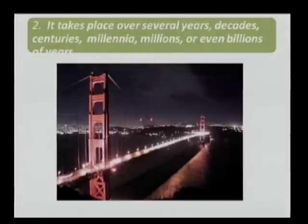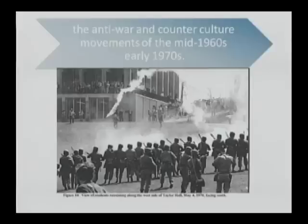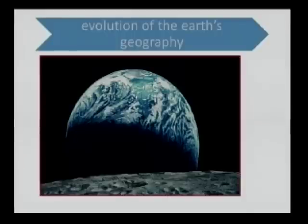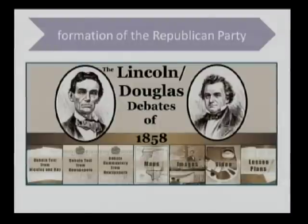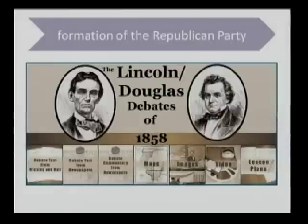The anti-war and counterculture movements lasted perhaps a decade or so, depending on when you think they began and ended, to the billions of years that it took for the Earth to evolve out of the solar nebula. Perhaps the shortest timeframe is that of the formation of the Republican Party, which happened within a very few years, when the nation went from the tenuous sectional peace of the Compromise of 1850 through the collapse of the Whig Party and the splitting of the Democrats, which led to the formation of the Republican Party only four short years later, in March of 1854.